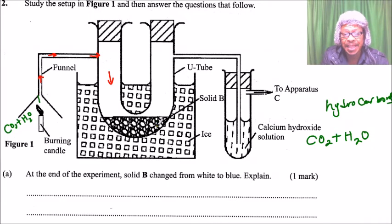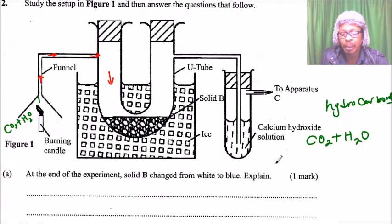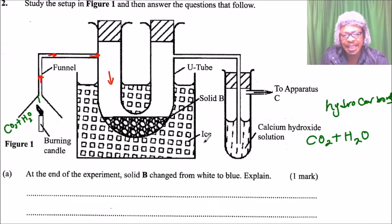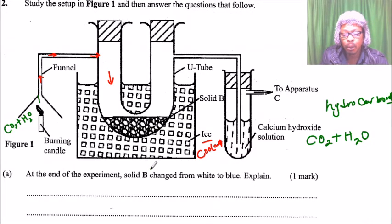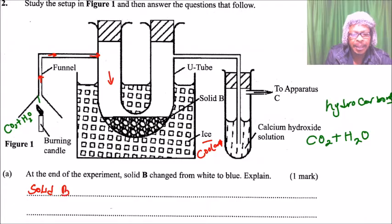What is coming into contact with solid B is CO₂ and water. Therefore, solid B is a substance used to test for the presence of water. We have two types: anhydrous copper sulfate (CuSO₄) and anhydrous copper(II) chloride. The ice acts as a coolant. Solid B becomes hydrated — it gains water molecules.